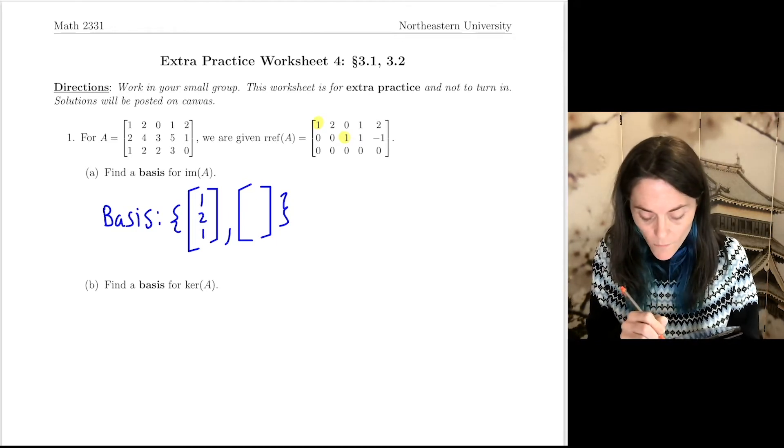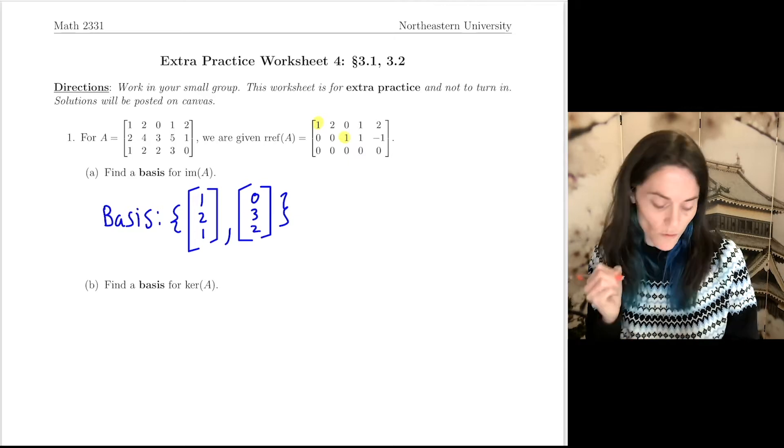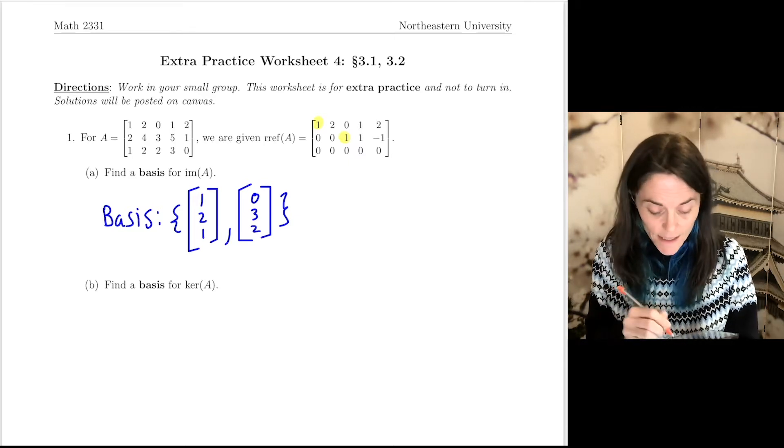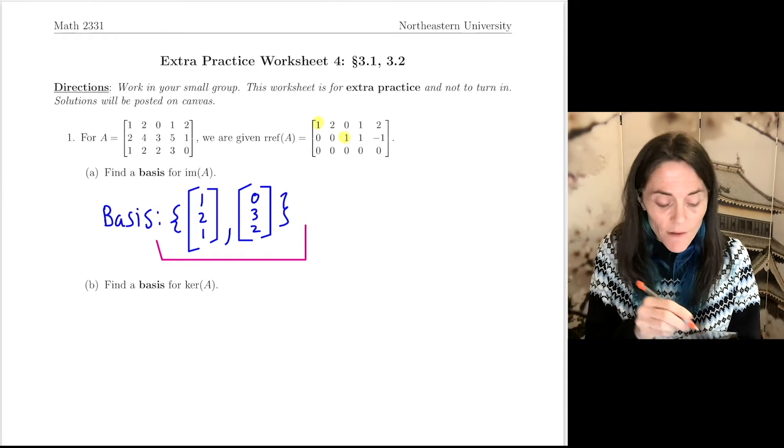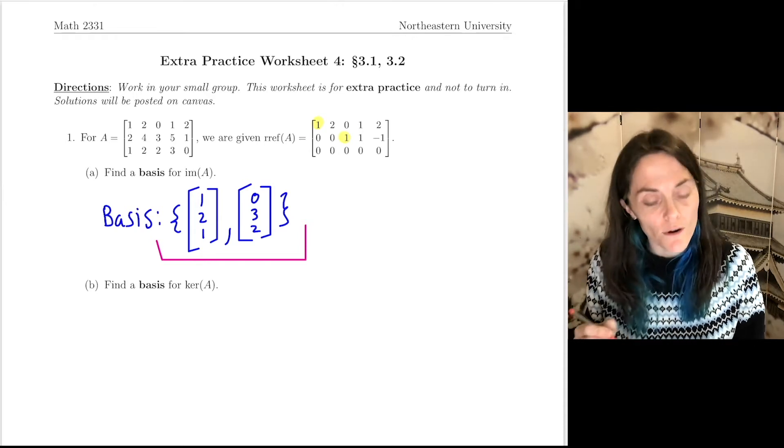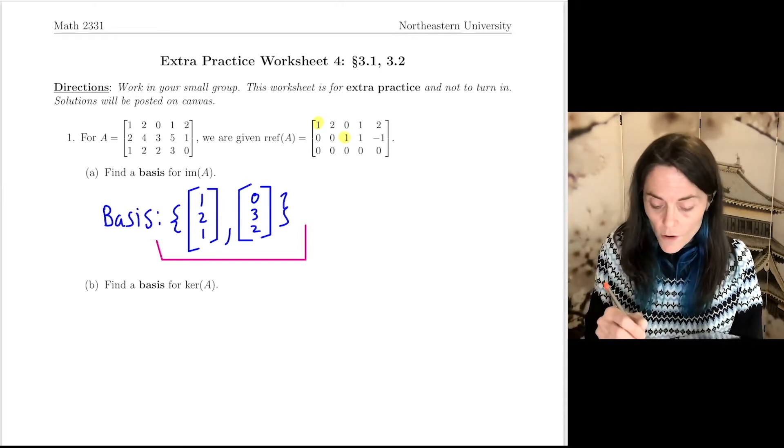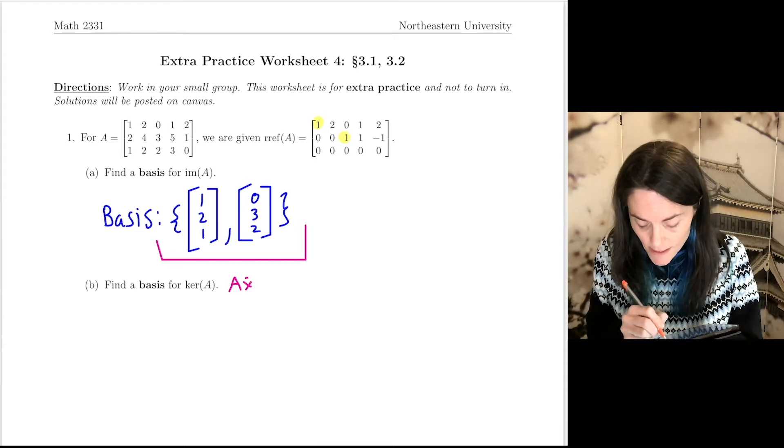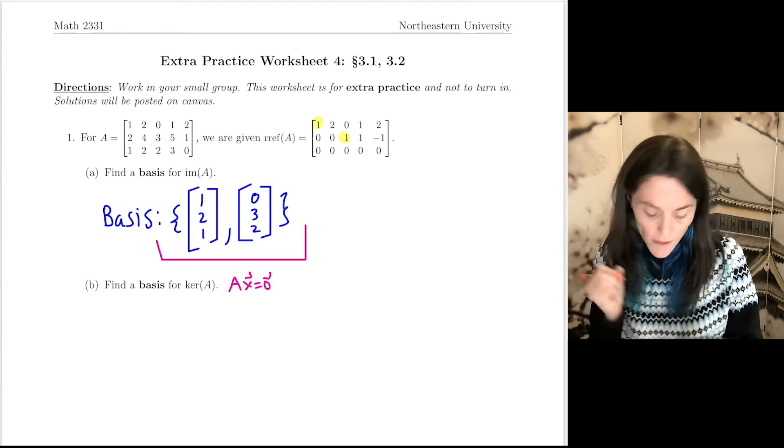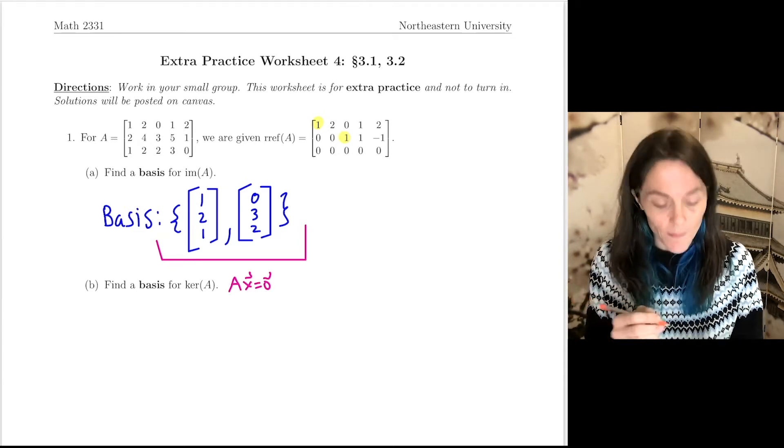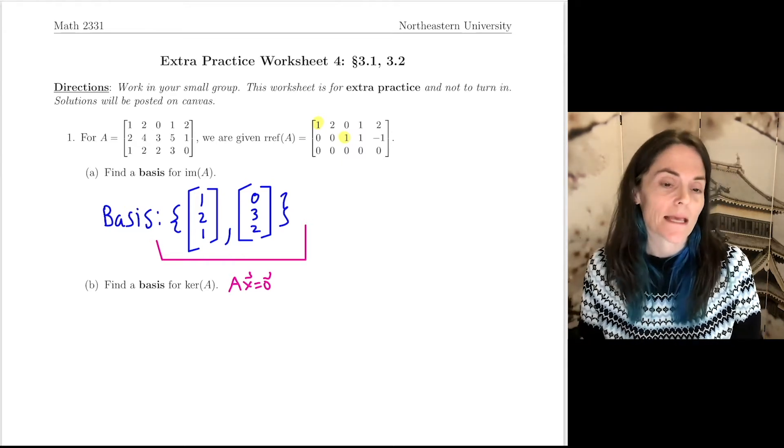So we have 1, 2, 1, 1 and 0, 3, 2. This is our answer to letter A. While we have a little bit more work to do for the kernel, recall the kernel is all solutions to AX equals 0.